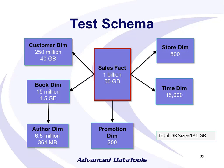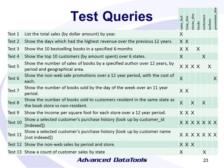This is the schema used for the accelerator: a fact table with a billion records representing a bookstore with sales. The distribution of the data is not regular — different years and different stores have different amounts of data. We've got customers spread all over, stores, a time dimension, and all products are books. The total size is 181 GB; the fact table alone is 56 GB.